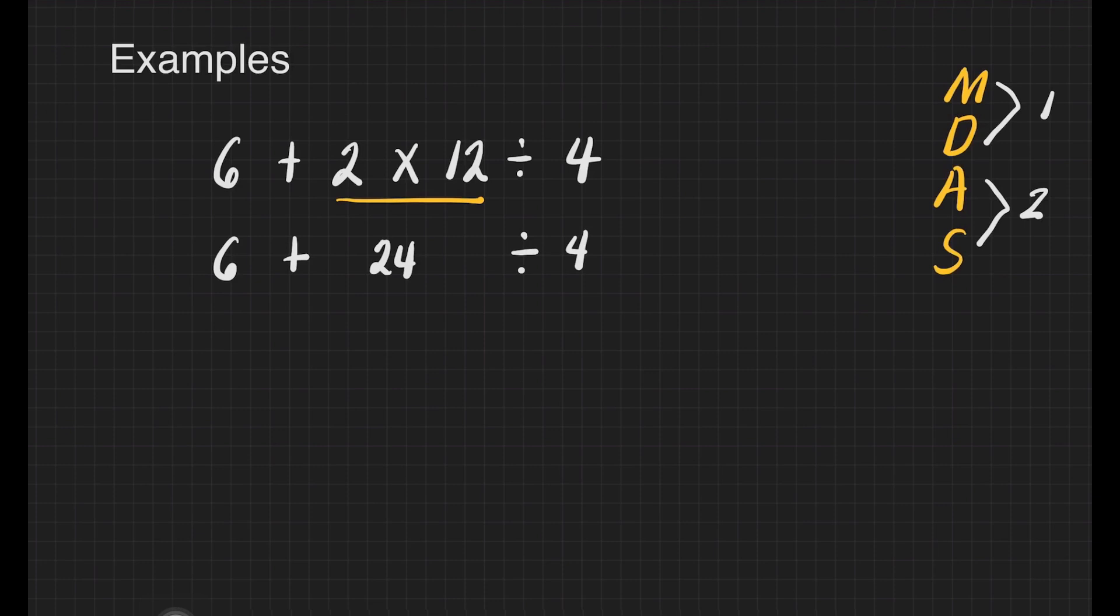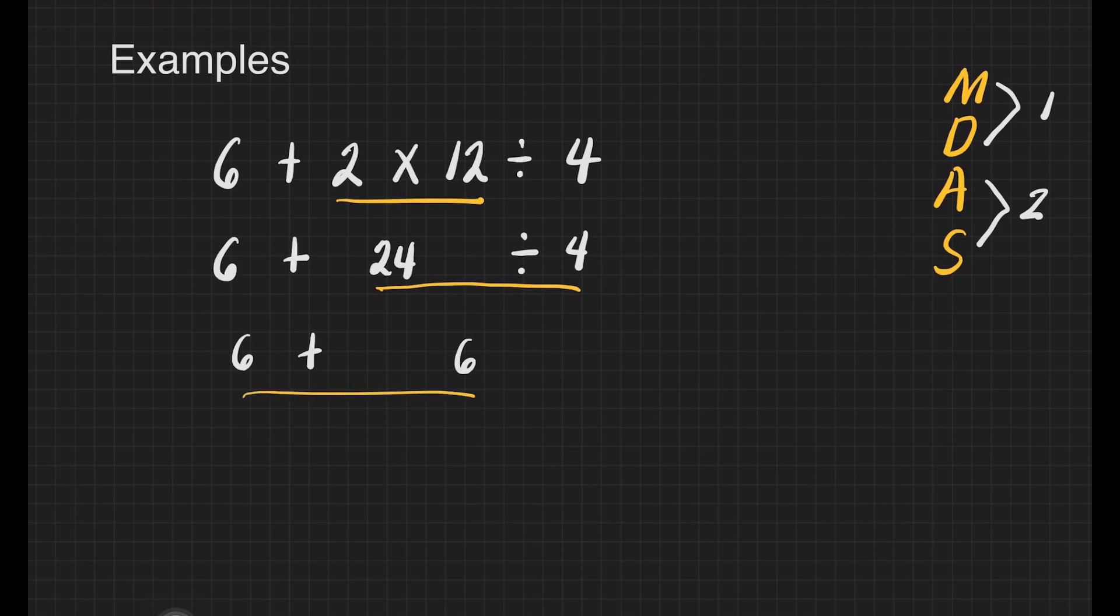What's next? Addition or division? Of course, we will divide. 24 divided by 4 equals 6. Then copy the addition sign and 6. 6 plus 6 equals 12. And that is our final answer.